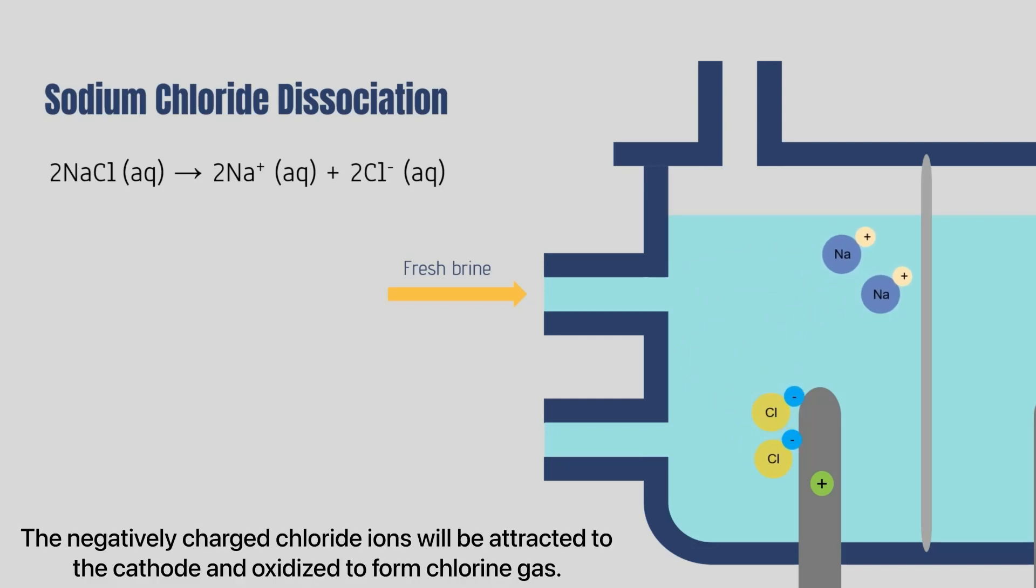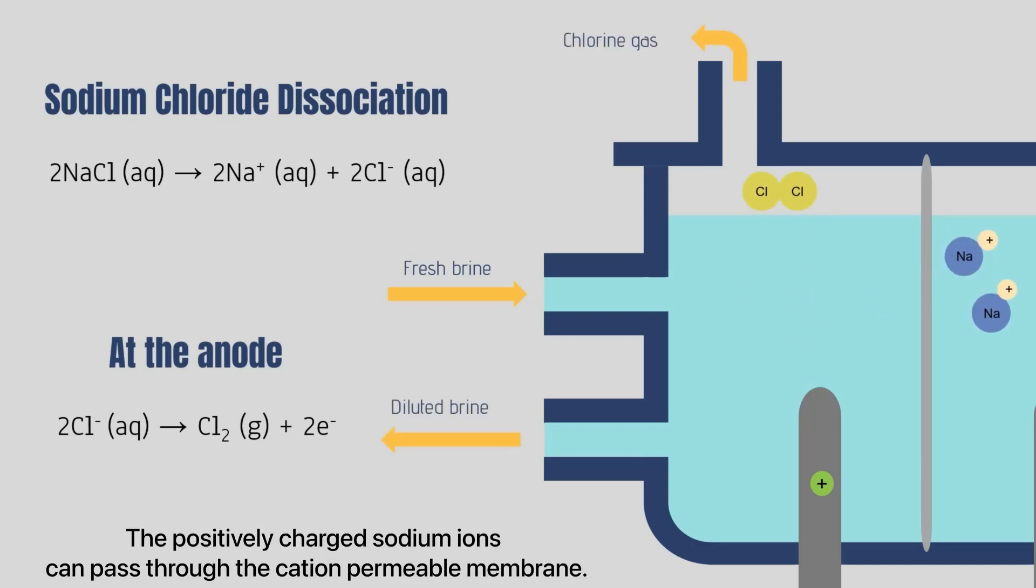The negatively charged chloride ions will be attracted to the cathode and oxidized to form chlorine gas. The positively charged sodium ions can pass through the cation permeable membrane.